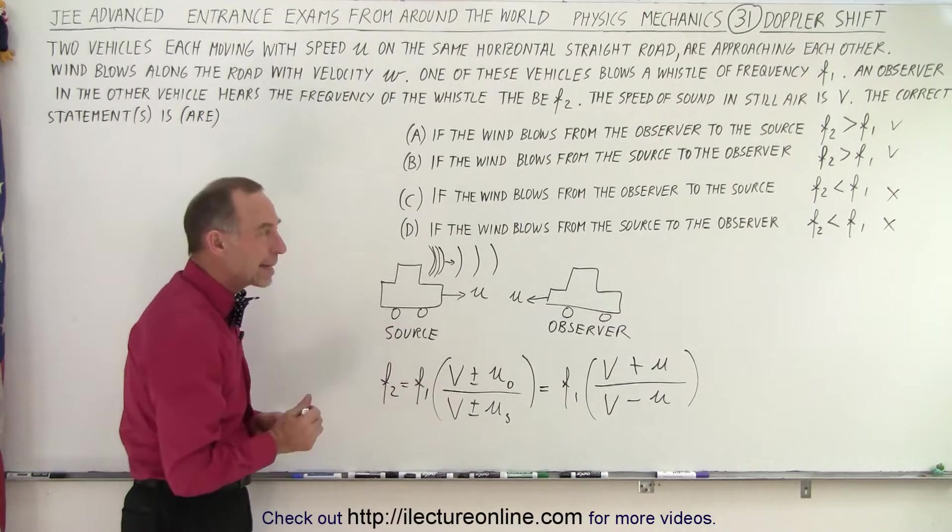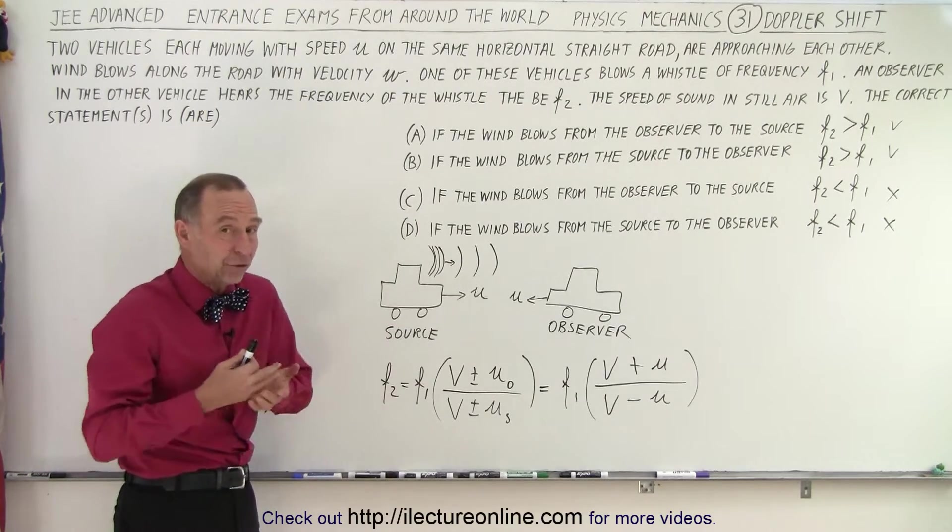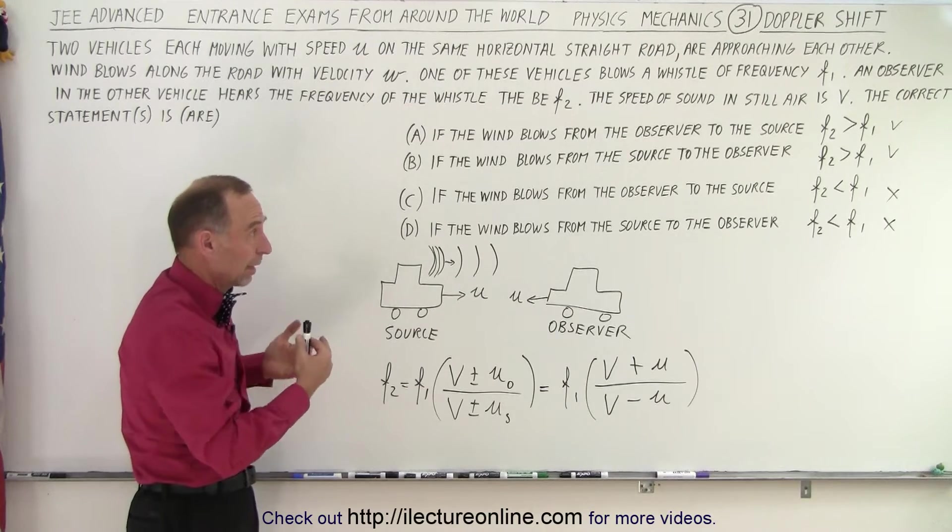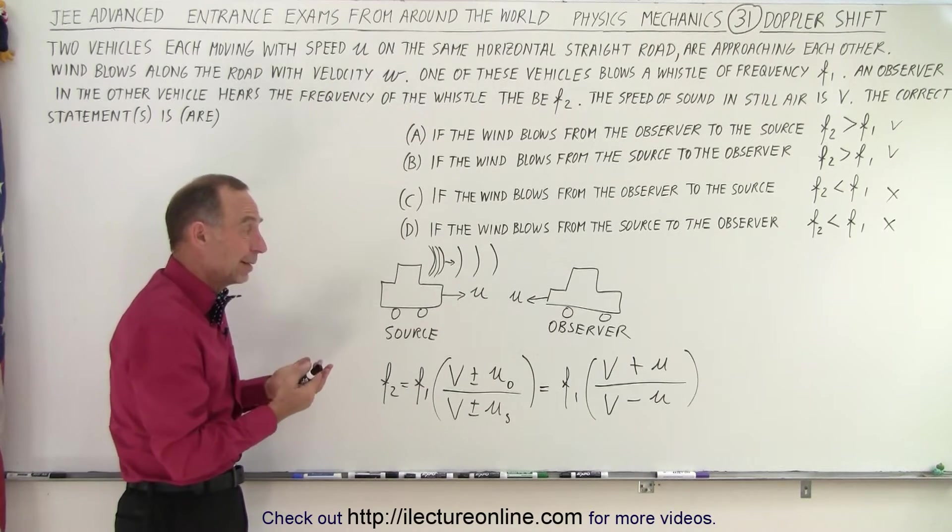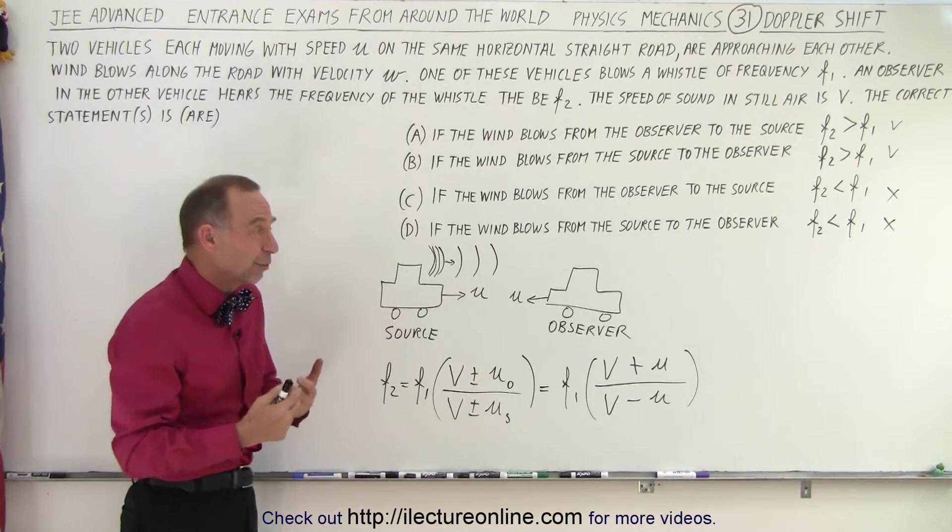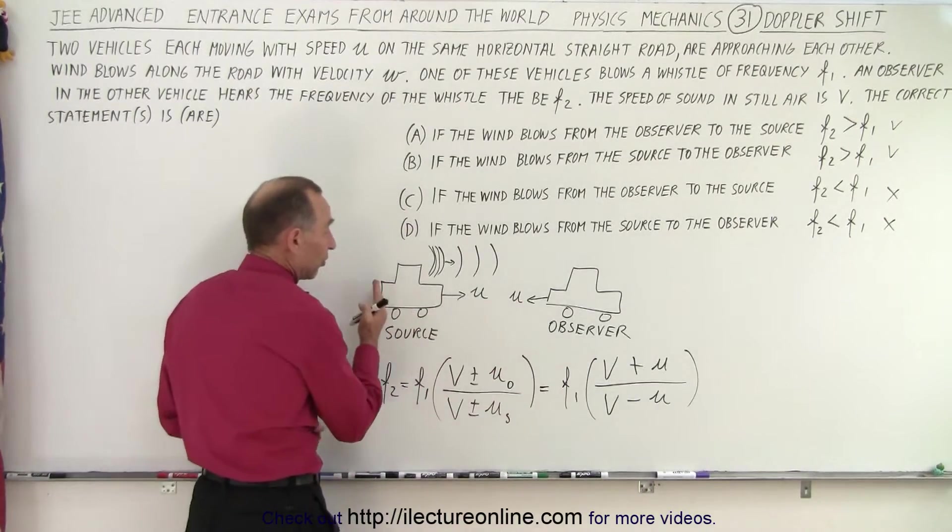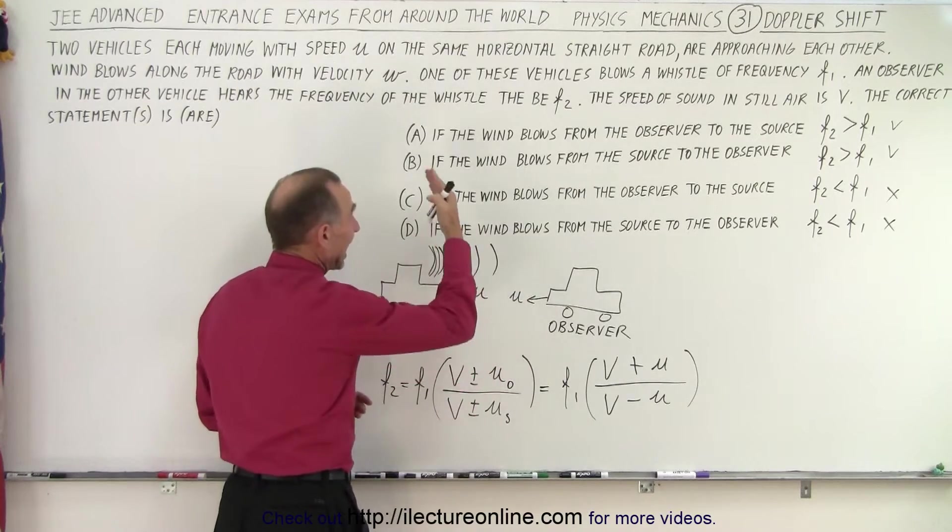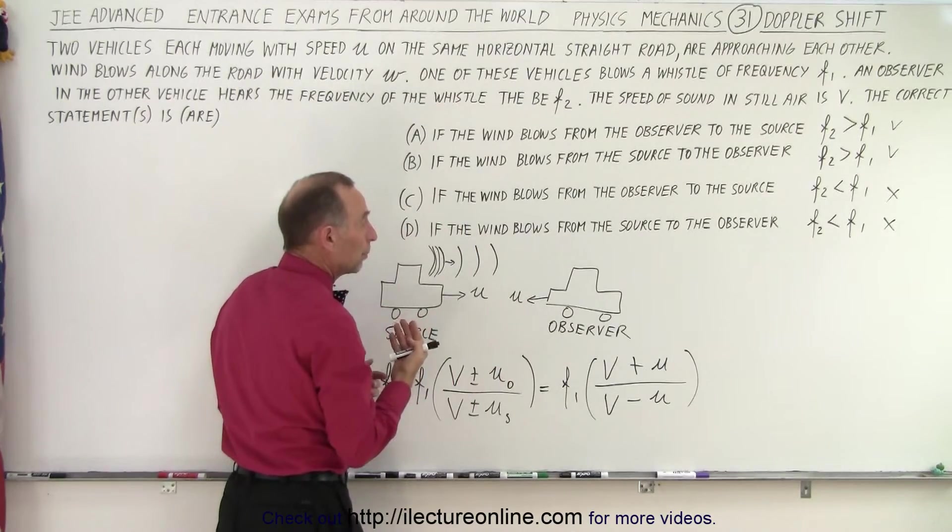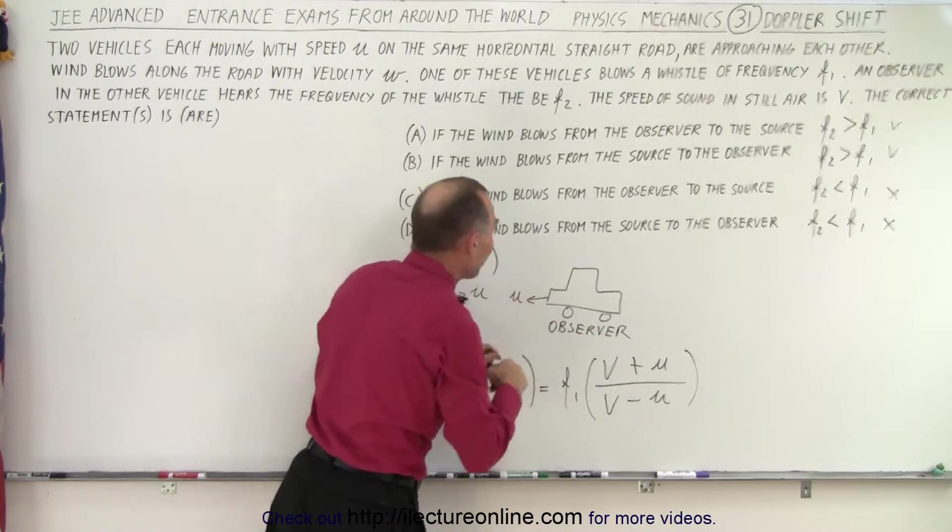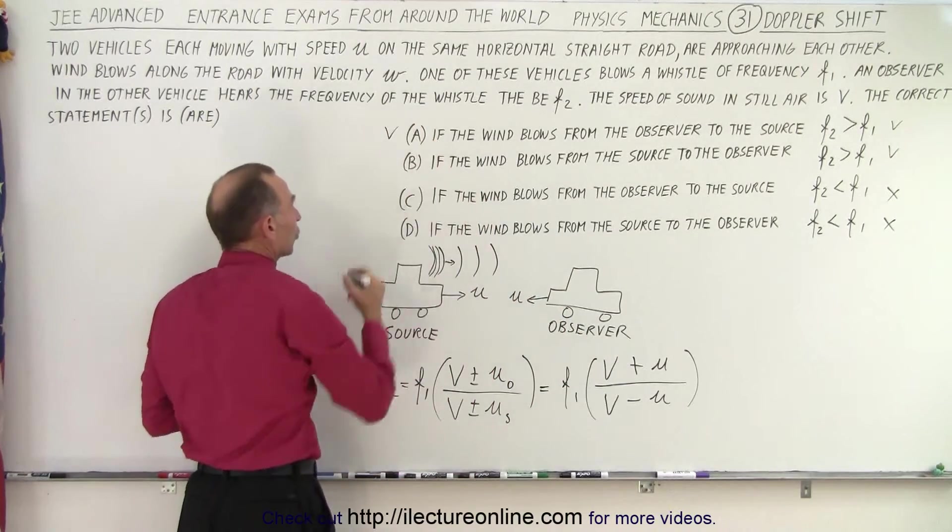There's another hint we can take here. The fact that they didn't give us actual numbers, simply U, W, and V, well it shouldn't really make any difference if the wind is blowing or not in the relation between F2 and F1. So since the wind is blowing from the source to the observer, we know that A still must be true because essentially it causes the waves to travel to the observer faster. So that's still true.